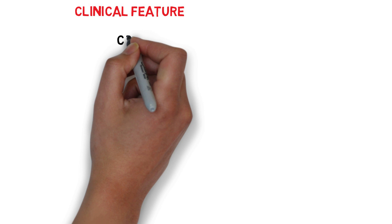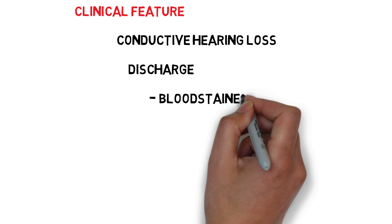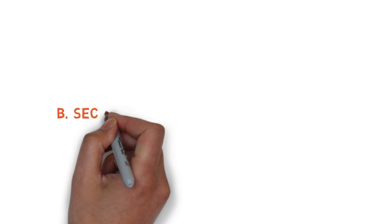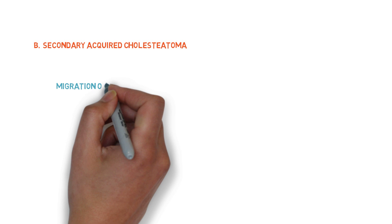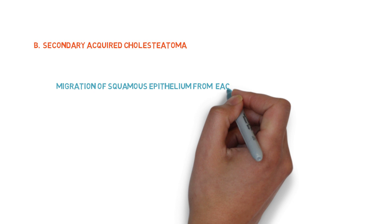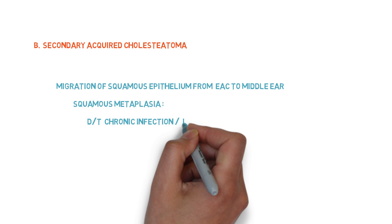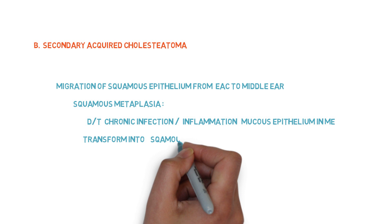The clinical features of primary acquired cholesteatoma include conductive hearing loss and discharge. The discharge may be blood-stained, scanty, purulent, or foul-smelling. In secondary acquired cholesteatoma, which is secondary to perforation, there is migration of squamous epithelium from the external auditory canal into the middle ear. There is also chronic inflammation or infection of the mucous epithelium in the middle ear, which may transform the middle ear epithelium into squamous epithelium — a process called squamous metaplasia.